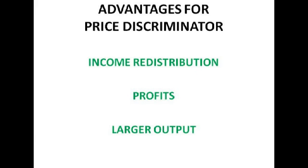What are the advantages for the price discriminator? Income redistribution is a big one — income is essentially redistributed from consumers to producers because each consumer's surplus is reduced. Profits is the next one — obviously increased profits because you're selling each unit at the maximum possible price. That's basically the main objective.